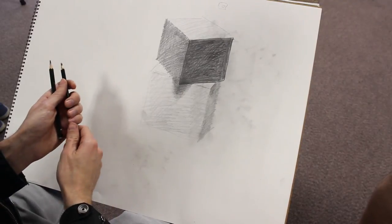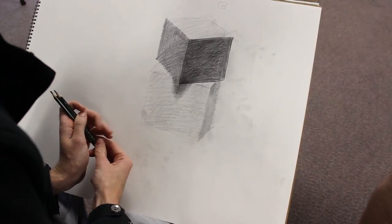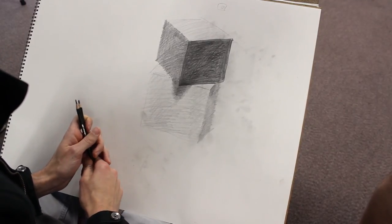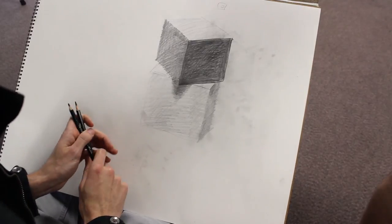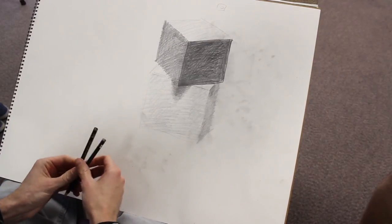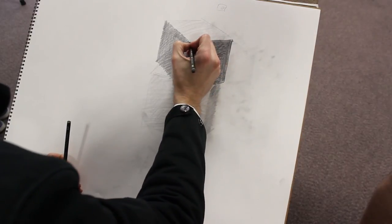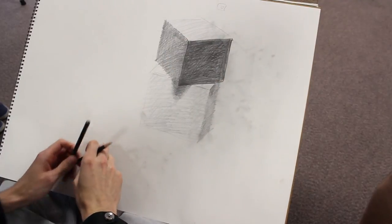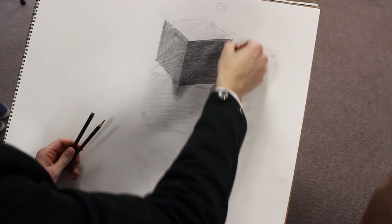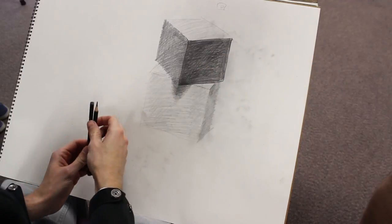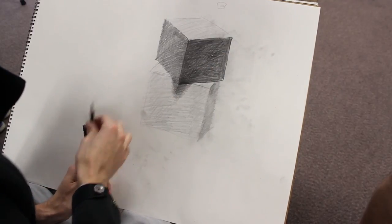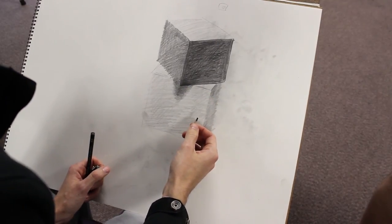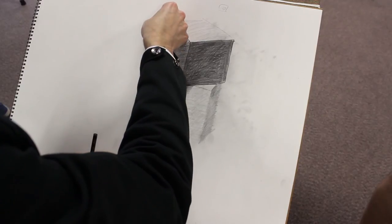So what I want you to do is decrease your dependence on outline to define an object and start increasing your dependence on value to do it. And then at the very end, when you're done with all the values, then in like three or four little spots where you just want to, say, bring something forward, you can just do a little outline like that. But what I don't want to see is like an evenly line-weighted outline over every little thing. Because that, you know, it's a cool cartoon effect but not really useful for drawing. So when you do outlines, you want to use line-weight concept.